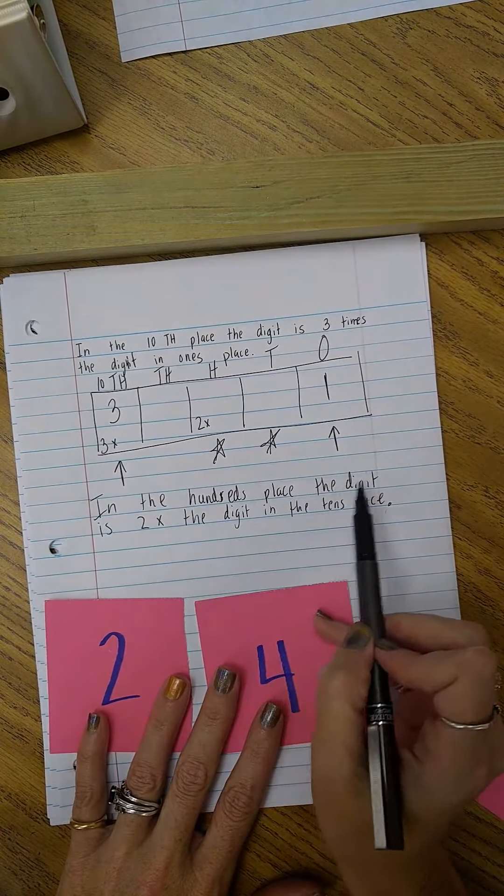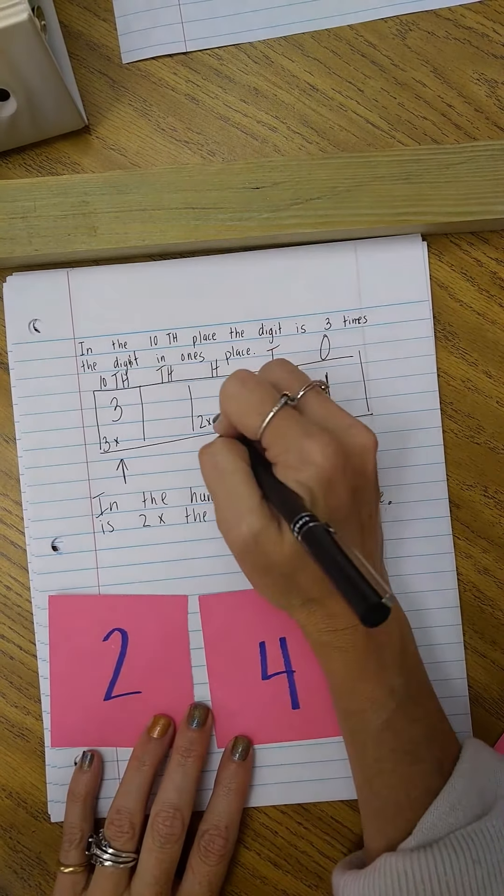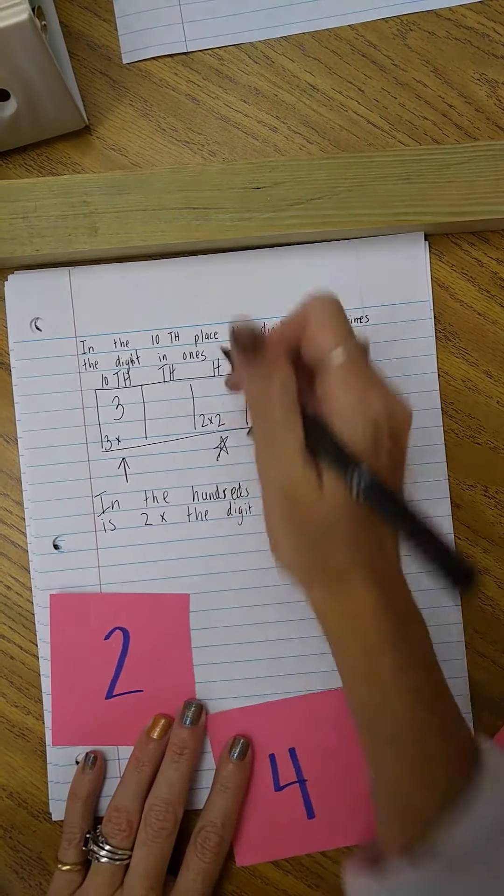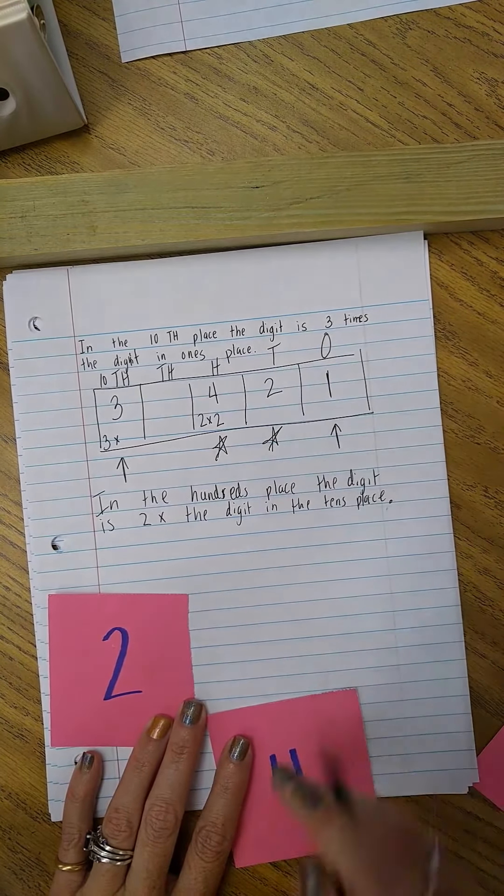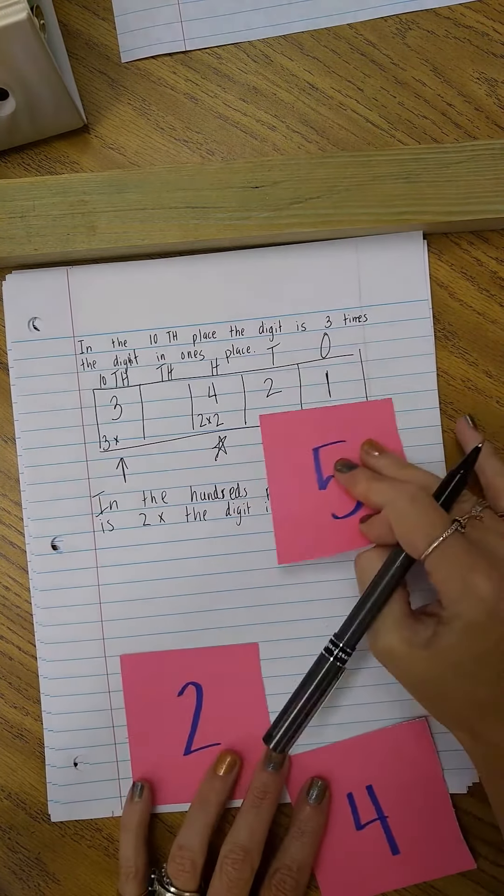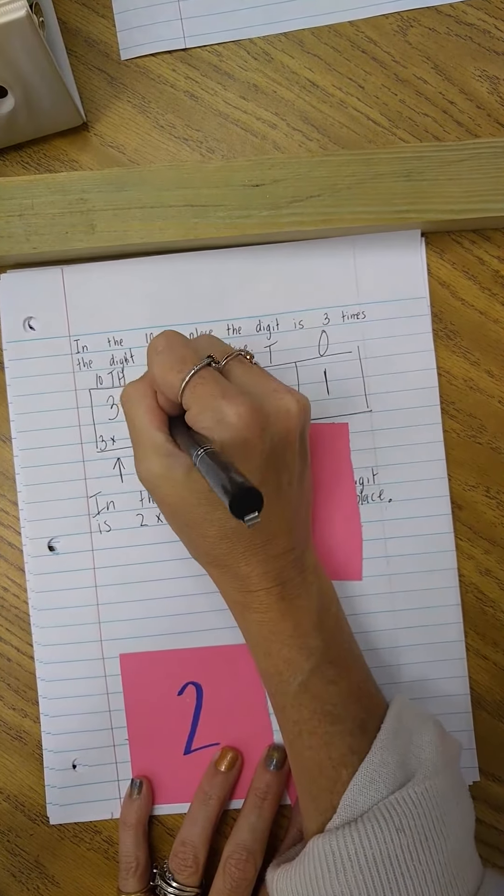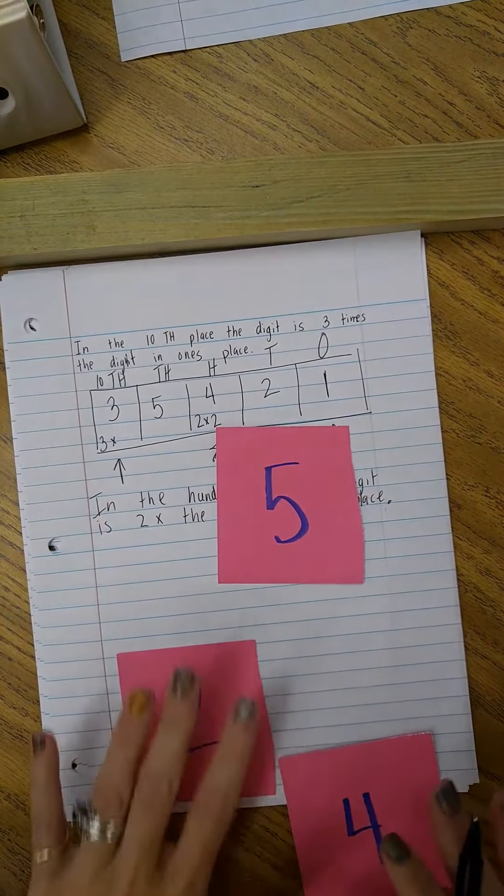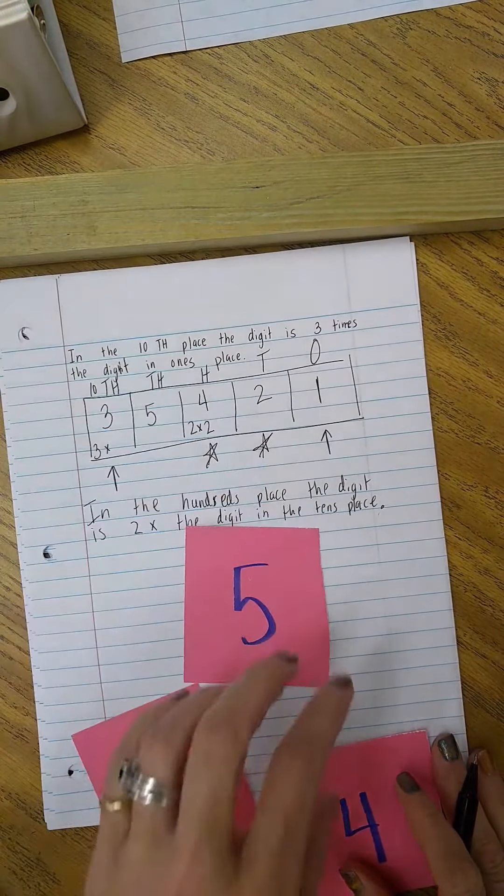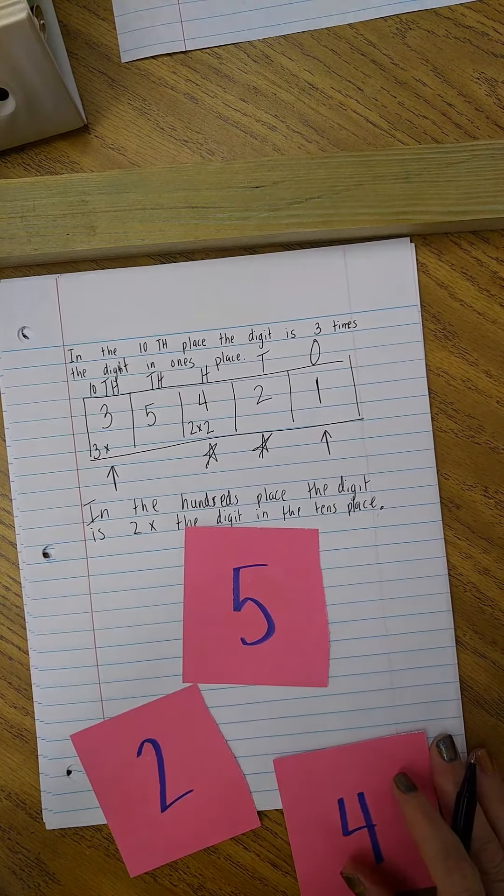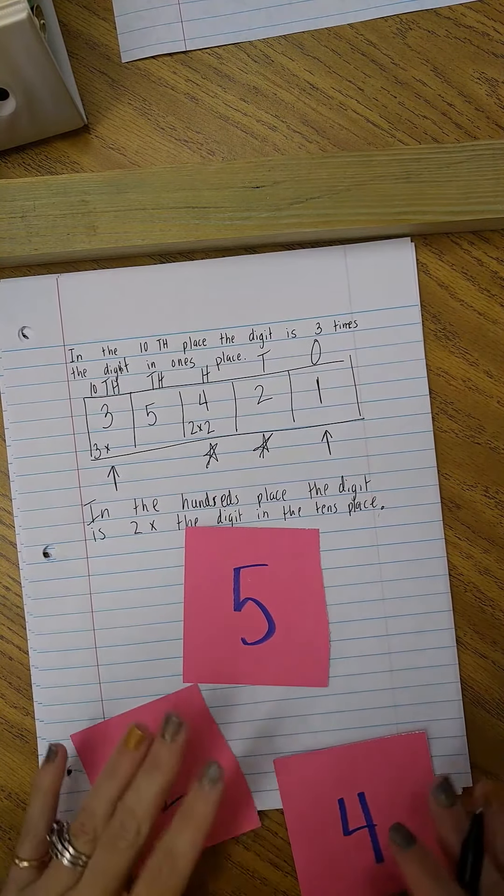So the hundreds place digit is two times, well two times two equals four. So this one's four. Then what is in the tens place? So that one is two. And that just leaves me with my last digit which is a five. So they will have to create a number using a place value chart based on stipulations of multiplication. And that's a standard that they learn in third grade.